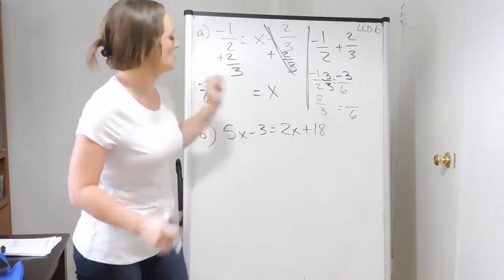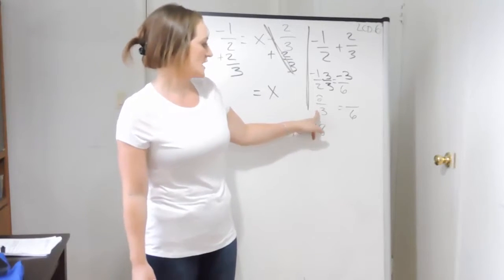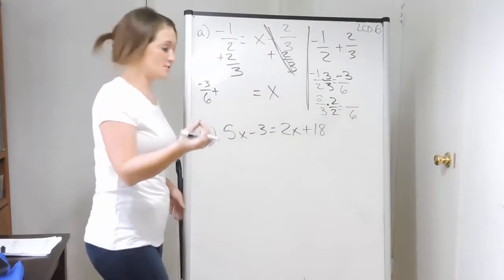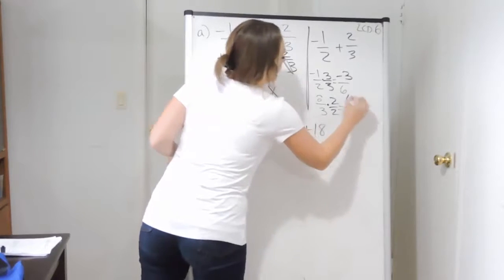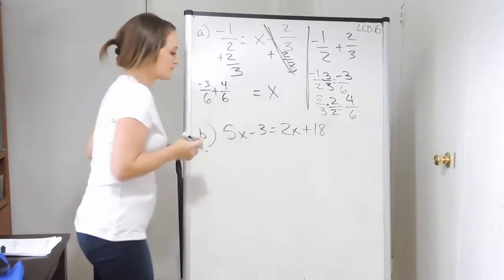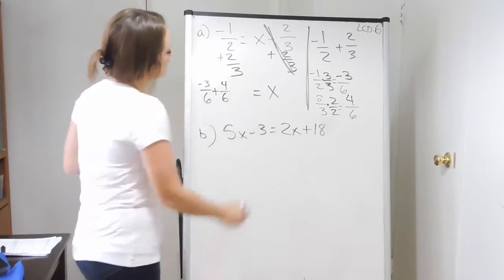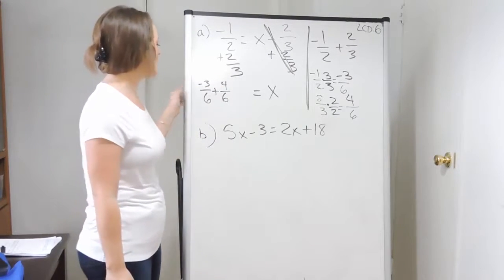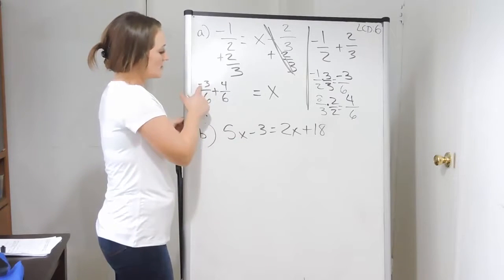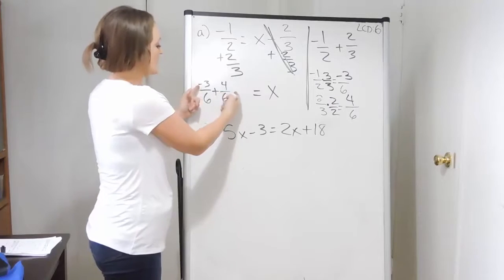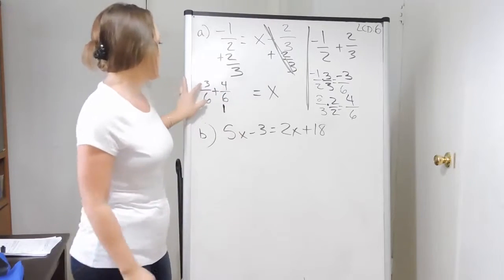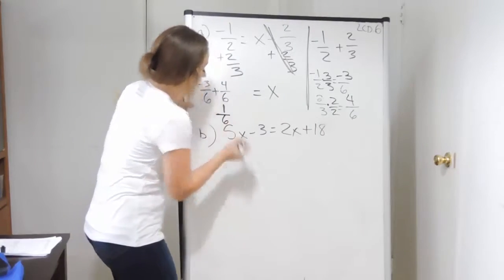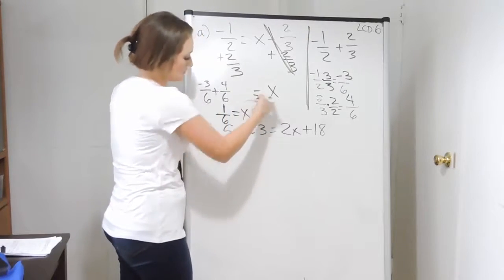That's being added to two thirds. I need to change that three into a six — three times two is six — so I multiply by two over two. When I multiply across, I get four over six. So I'll plug that in. Whenever I complete this addition, I'll have my problem solved. When adding or subtracting fractions, you only add or subtract the numerators and keep the same denominator. So negative three plus four is one — different signs subtract, keep the sign of the bigger. Or think of it this way: if you had negative three dollars and added four, you'd be up one. So here I have one sixth equals x.